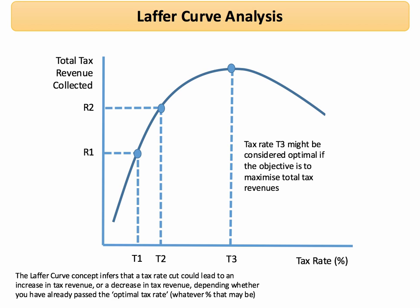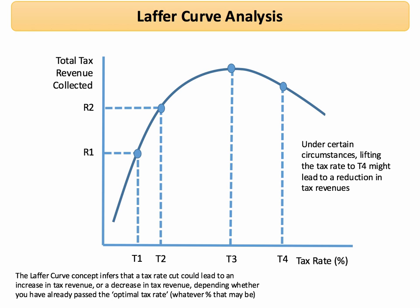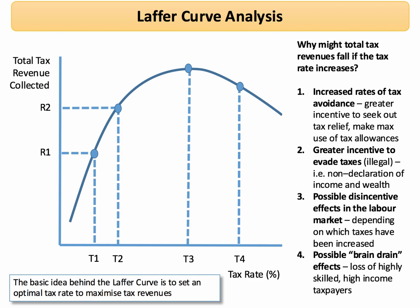Of course the government might have introduced a tax for reasons other than the need to generate revenue to the exchequer. But if we move beyond t3, under certain circumstances increasing the tax rate to t4 — a relatively high tax rate — might actually cause a fall in total tax revenue. One of the implications of this is that if we cut taxes from t4 to t3, the total revenue from tax might actually go up.